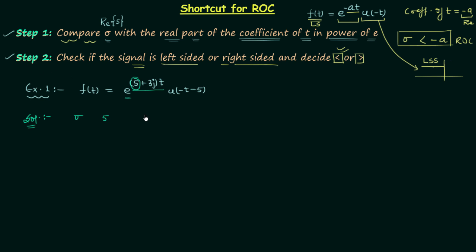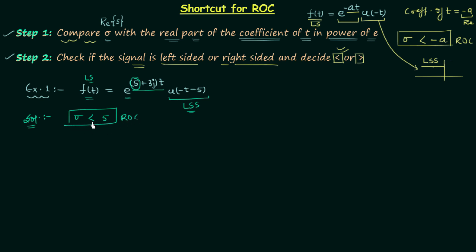To get the relation between sigma and five, we follow step two and check if f(t) is left-sided or right-sided. Plotting the waveform of u(-t-5), you will find it is a left-sided signal. When the exponential is multiplied by this left-sided signal, f(t) remains left-sided. So we have the less-than sign between sigma and five, giving us the region of convergence: sigma less than five.